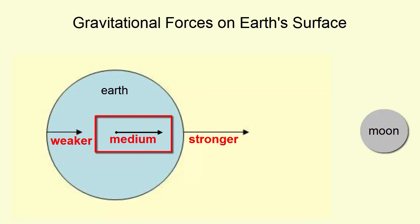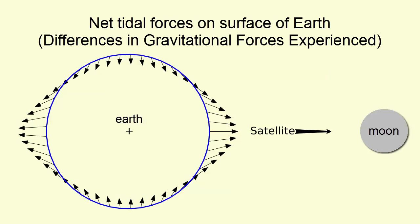If we take the medium-sized gravitational force between Earth and Moon experienced at the center of the Earth and subtract it from all the other force arrows found around the planet, we get this image, which shows the net tidal forces experienced on all points of Earth's surface as a result of varying gravitational forces, strength, and direction.